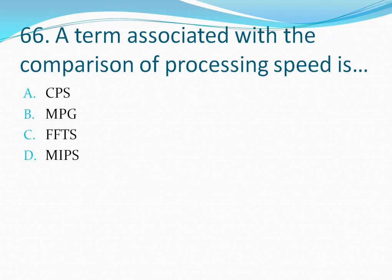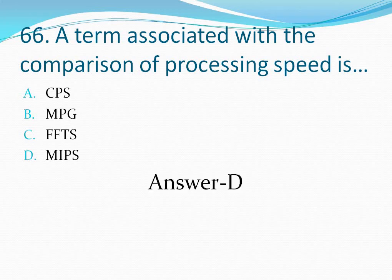Question number 66: A term associated with the comparison of processing speed is — your options are: option A CPS, option B MPG, option C FFTs, option D MIPS. A term associated with the comparison of processing speed is MIPS, so the correct answer is option D.